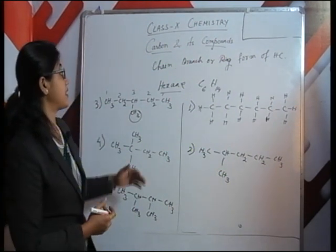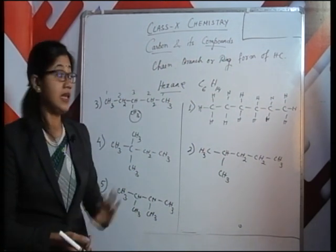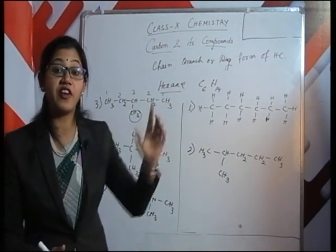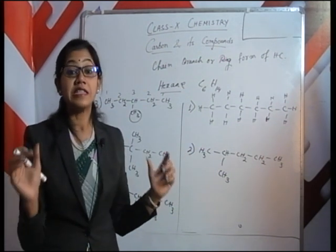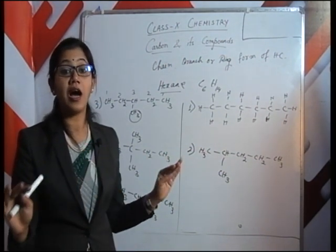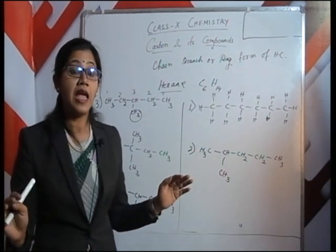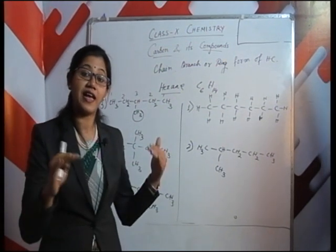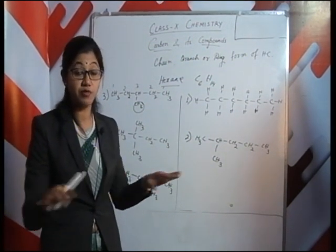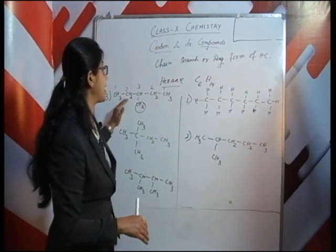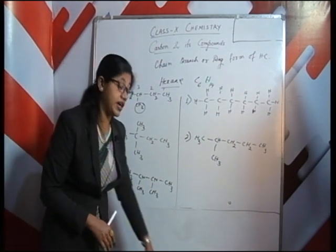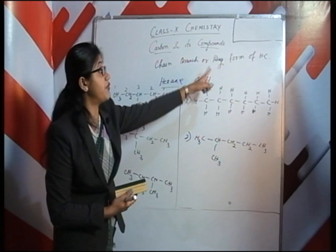To summarize: the first structure we drew was the chain form of hydrocarbon, where all carbons join hand-to-hand in a long chain. The other structures were branched forms of hydrocarbon. We have learned about chain form and branched form — now we need to learn about the ring form of hydrocarbons.